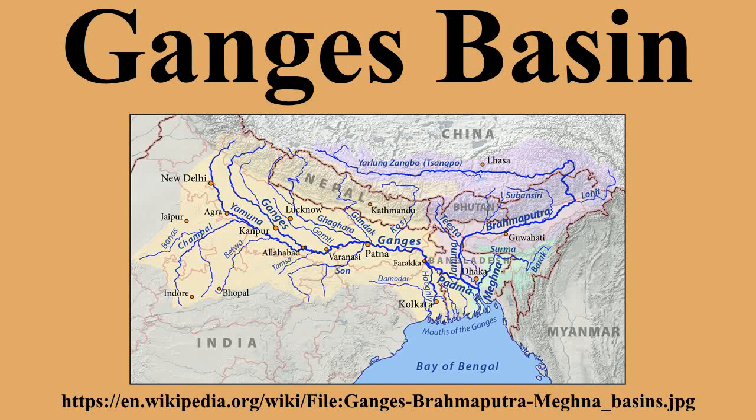On the west, the Ganges Basin borders the Indus Basin and then the Aravalli Ridge. The southern limits are the Vindhyas and Chotanagpur Plateau. On the east, the Ganges merges with the Brahmaputra through a complex system of common distributaries into the Bay of Bengal.